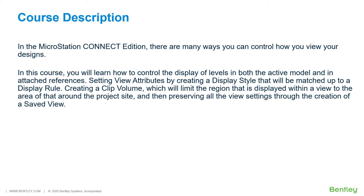In this course, you will learn how to control the display of levels in both the active model and in attached references. Setting view attributes by creating a display style that will be matched up to a display rule. Creating a clip volume, which will limit the region that is displayed within a view to the area around the project site. And then preserving all the view settings through the creation of a saved view.